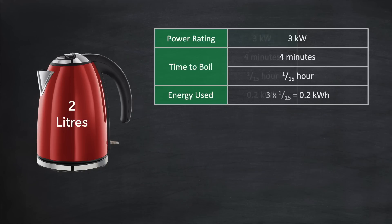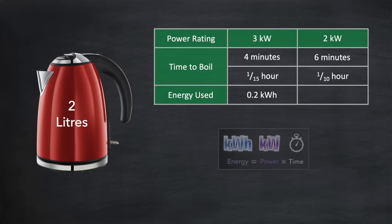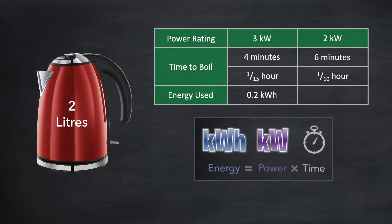Let's now consider a kettle that is only 2 kilowatts. The time taken to boil is longer now — 6 minutes — which when we convert to hours is 1/10th of an hour. The energy then is 2 kilowatts times 1/10th, which works out as 0.2 kilowatt hours. We shouldn't be surprised that the energy is the same as for the 3 kilowatt kettle, because that is the energy required to boil 2 litres of water no matter what the power of the kettle is.